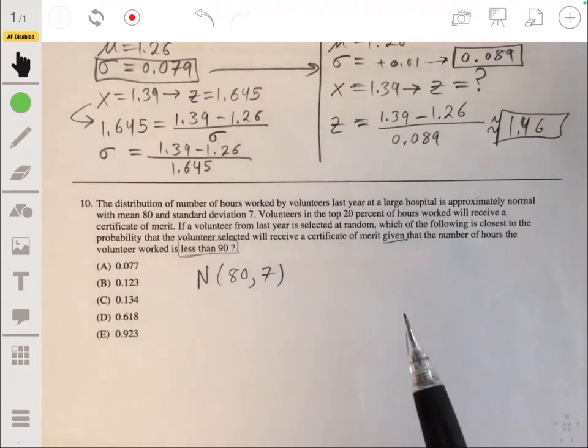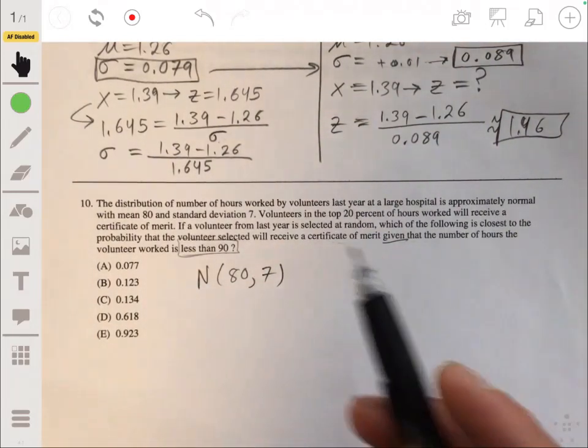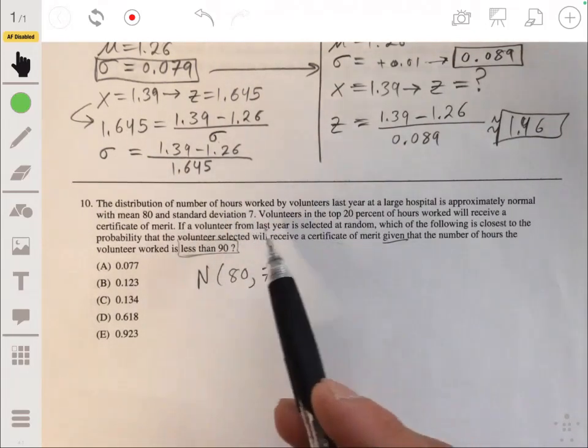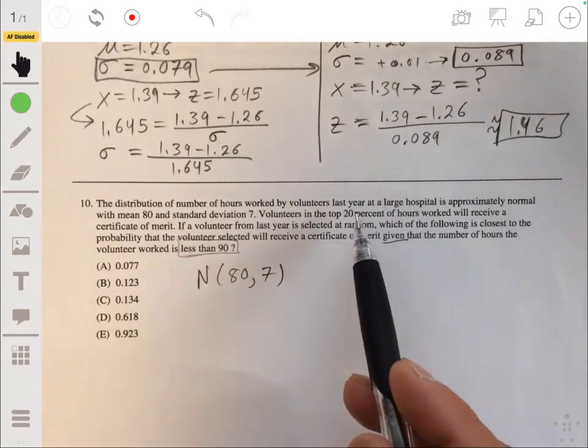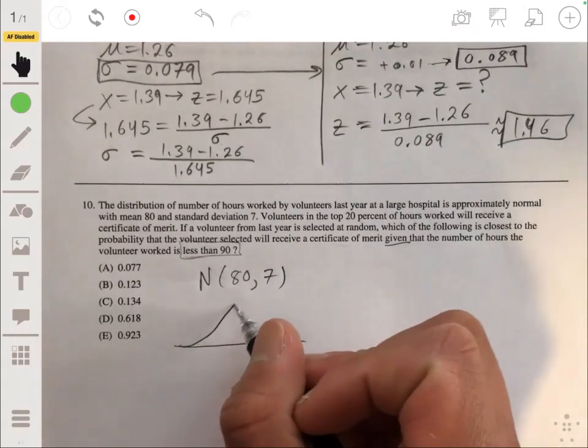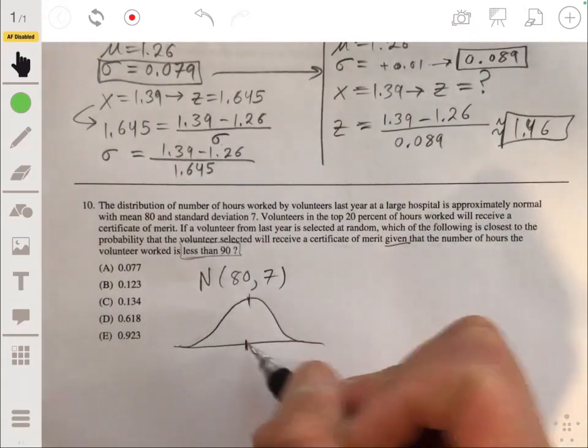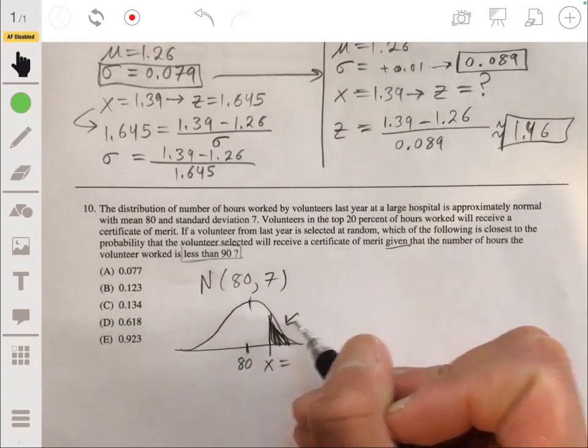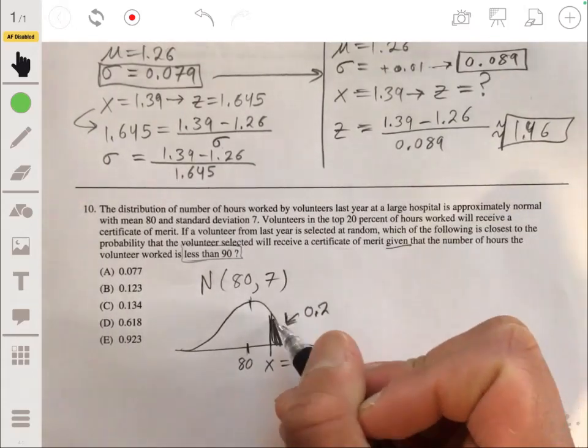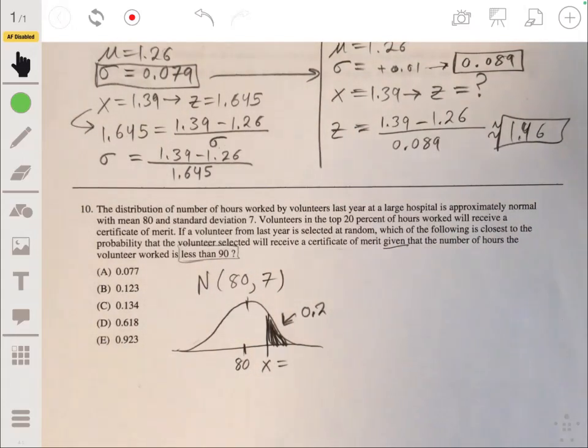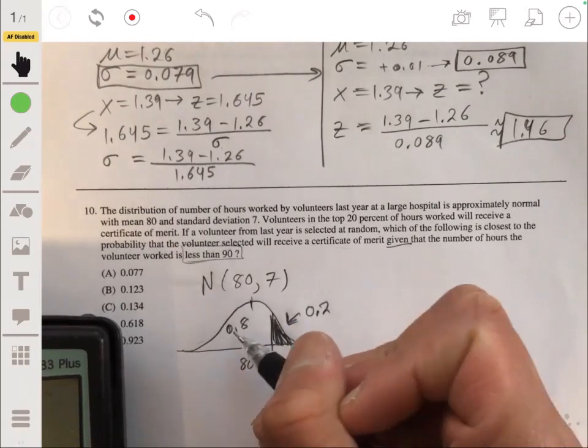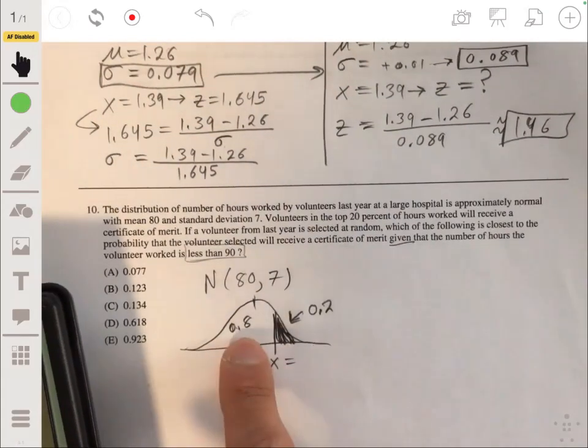Okay, so this is a conditional probability. So let's first find what the top 20 percentile is of this distribution. So we can know what the lower bound for the certificate of merit is. The mean is 80. We need to find the x value where there's 0.2 area to the left. And again, we can use our inverse norm function. If there's 0.2 to the right, means there's 0.8 to the left.